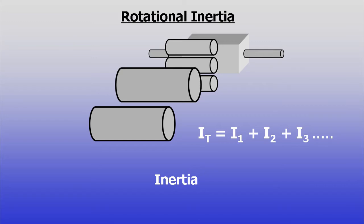Inertias are additive, so values for all moving parts can be found and added together to get a system value or total inertia.